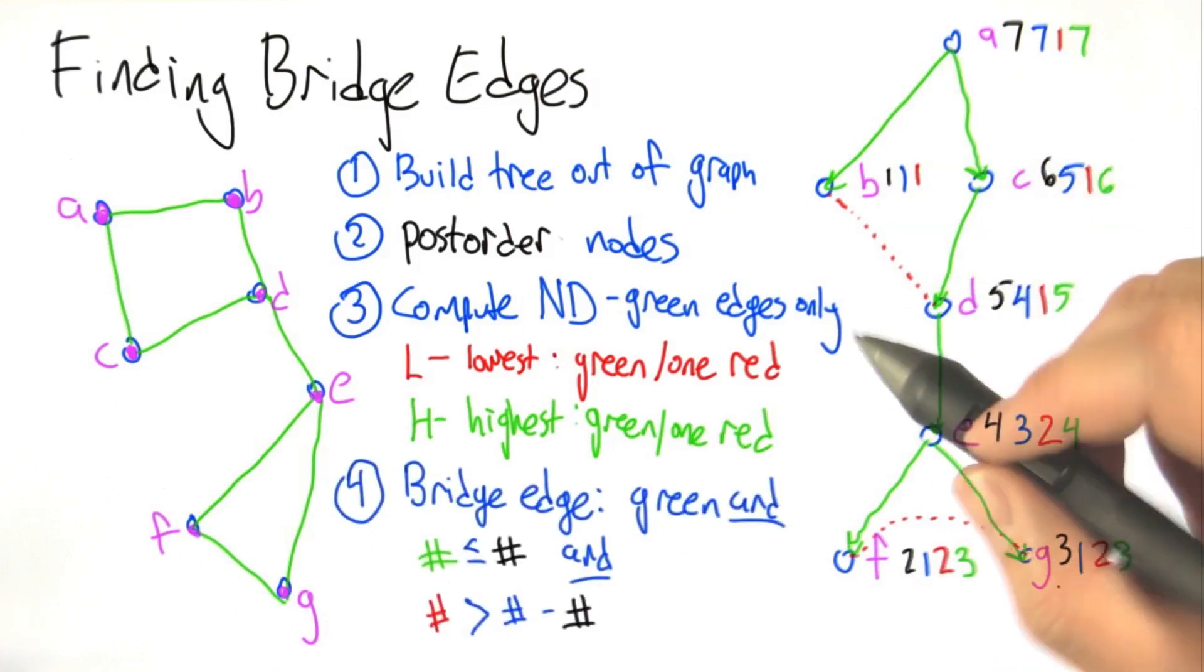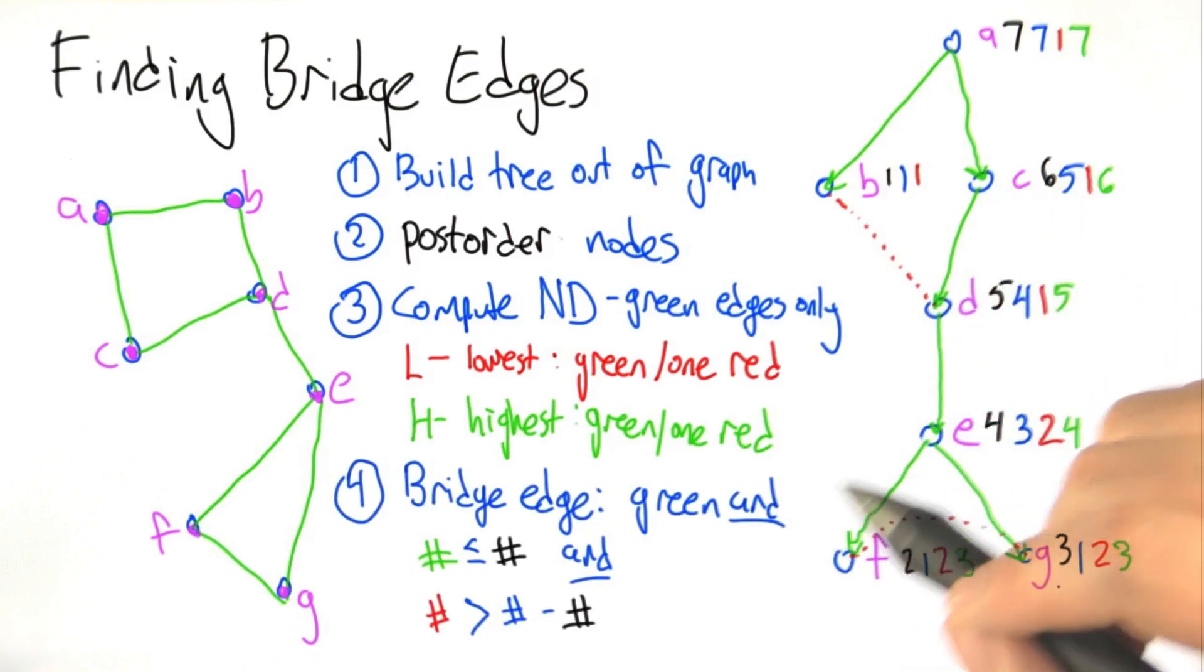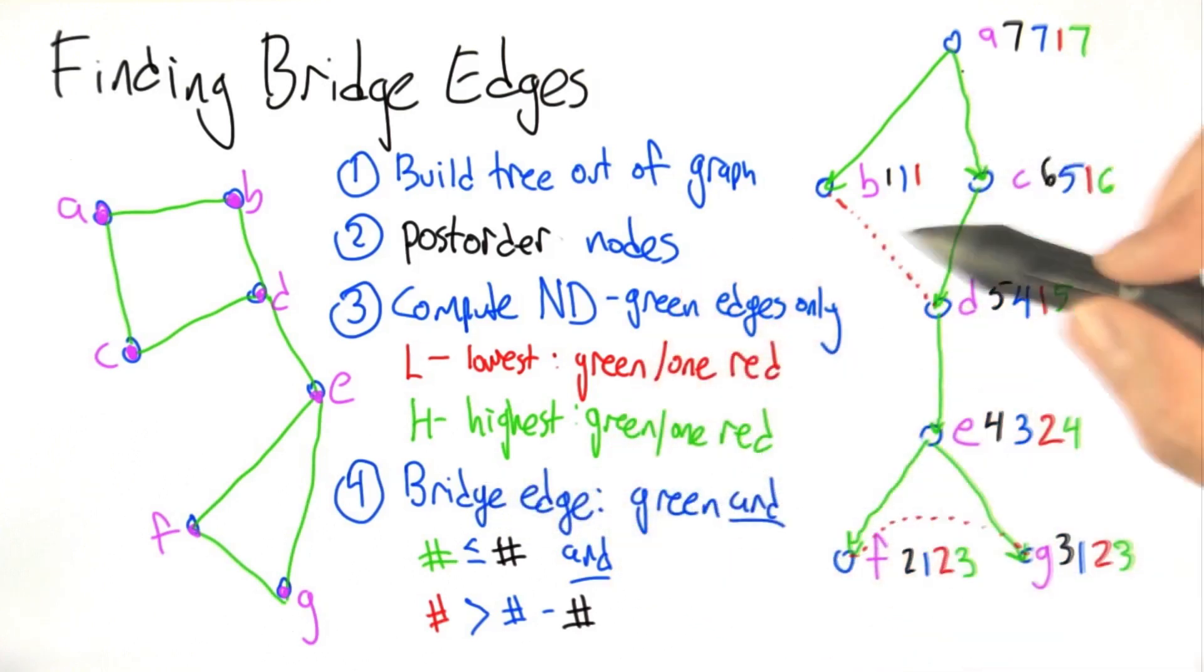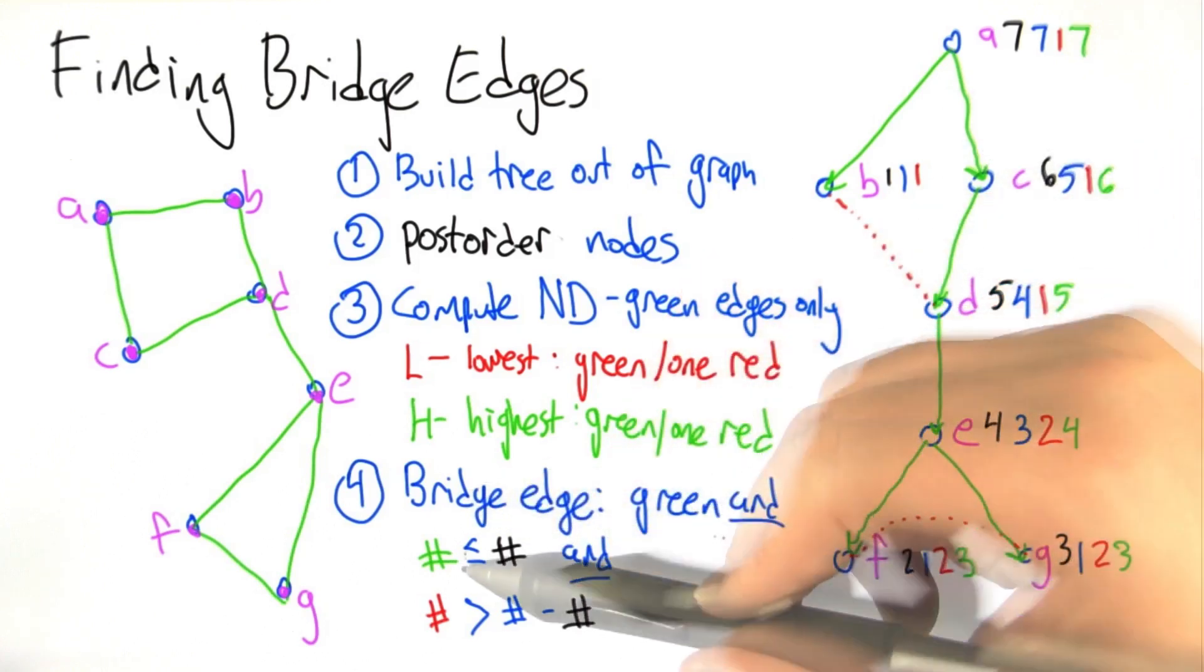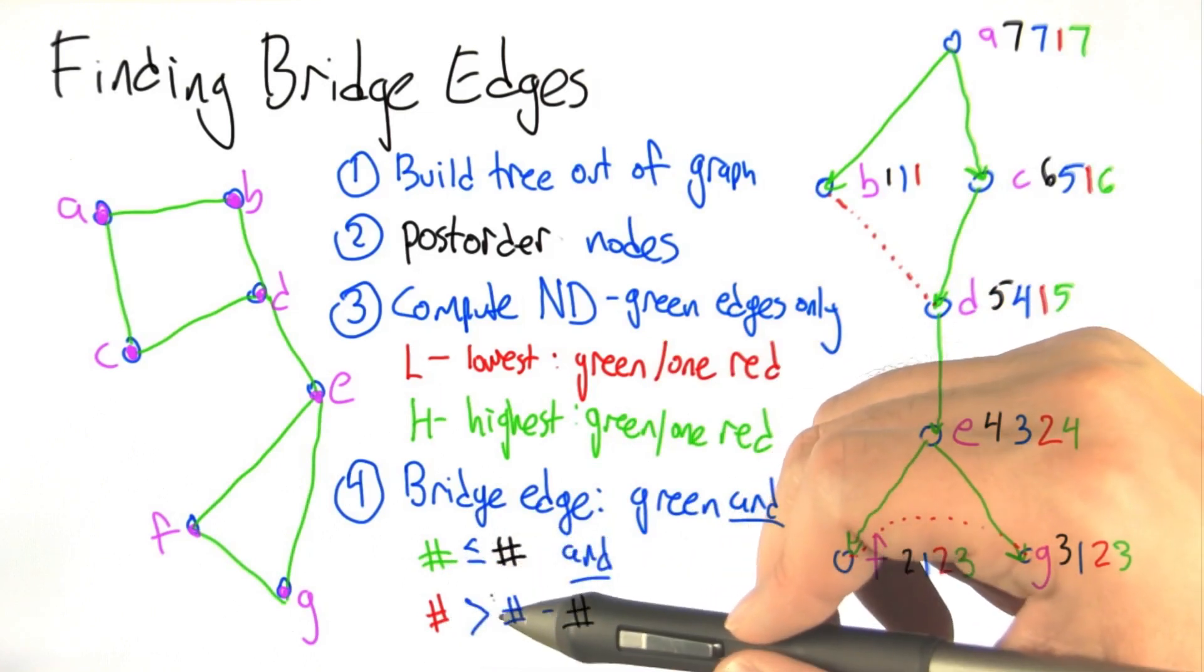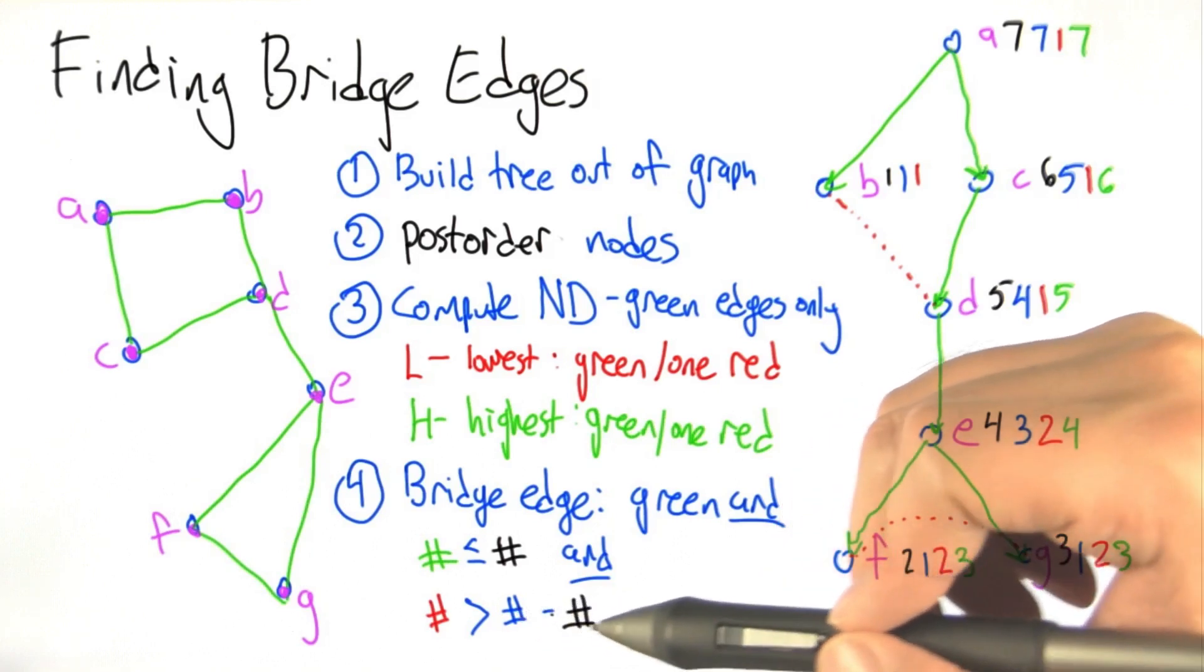So given all these nicely decorated nodes we now have a rule for figuring out which ones are the bridge edges. And this is the rule. All the bridge edges are the ones that are green. They have to be tree edges. And the green number is less than or equal to black number. And the red number is bigger than the blue number minus the black number.